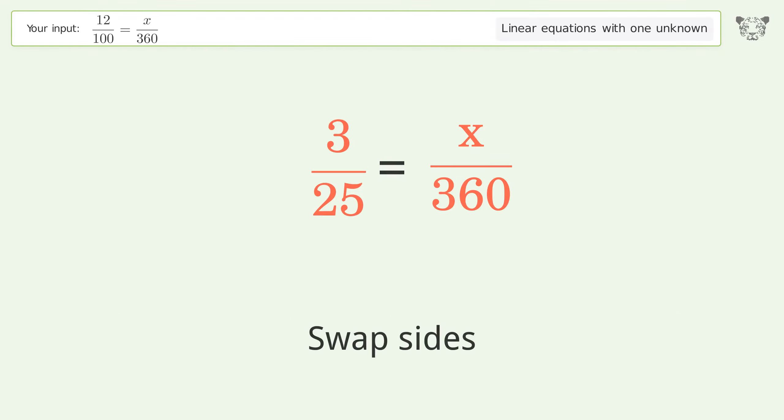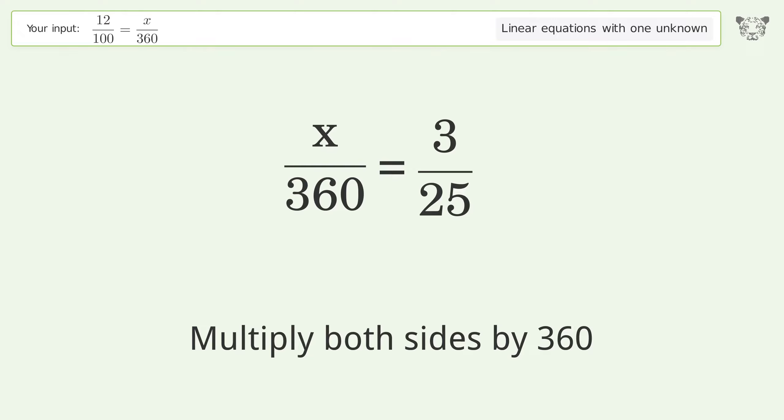Swap sides. Isolate the x. Multiply both sides by 360.